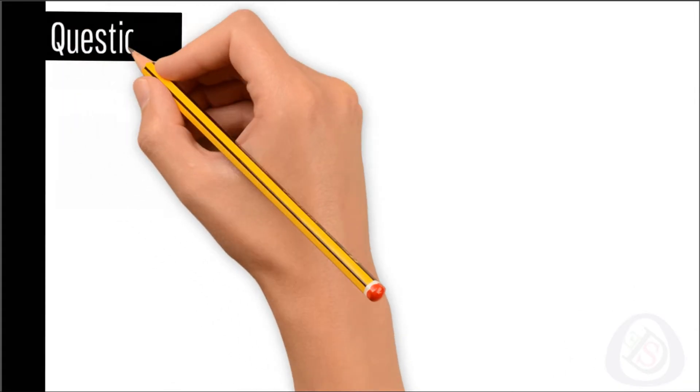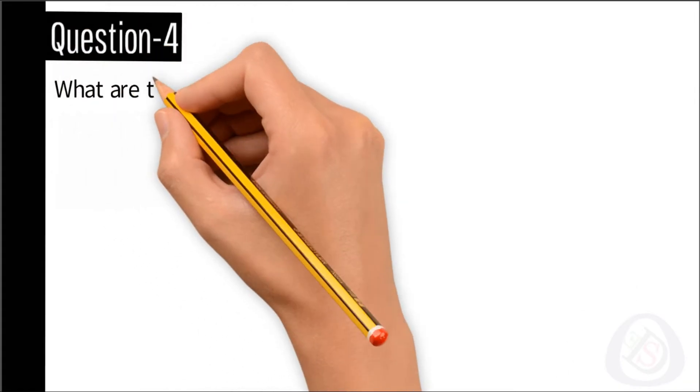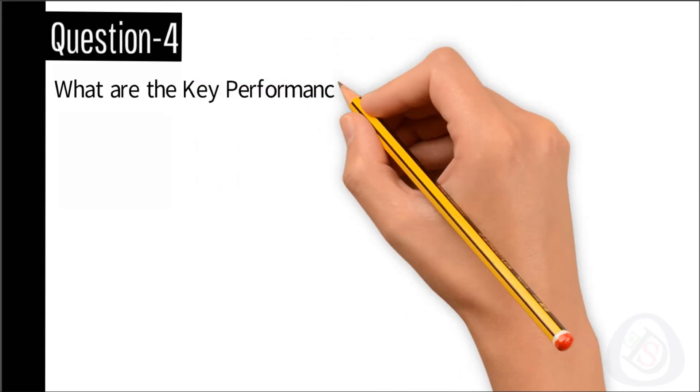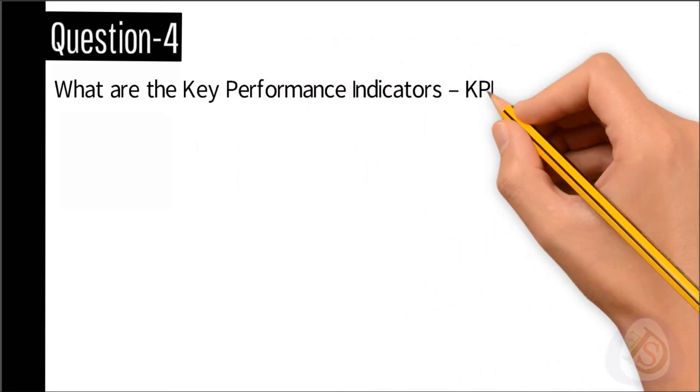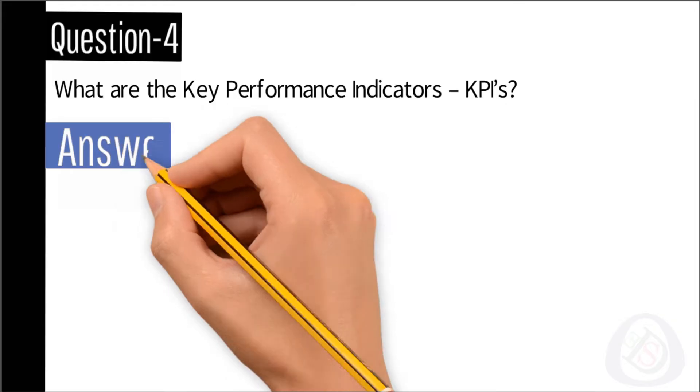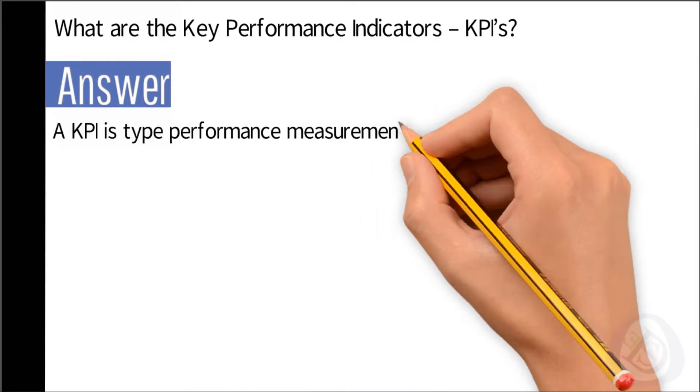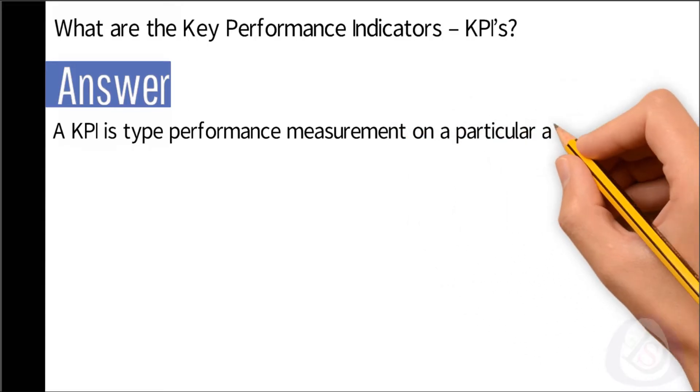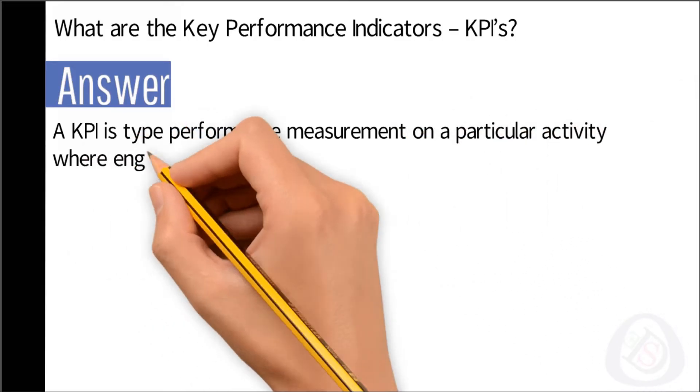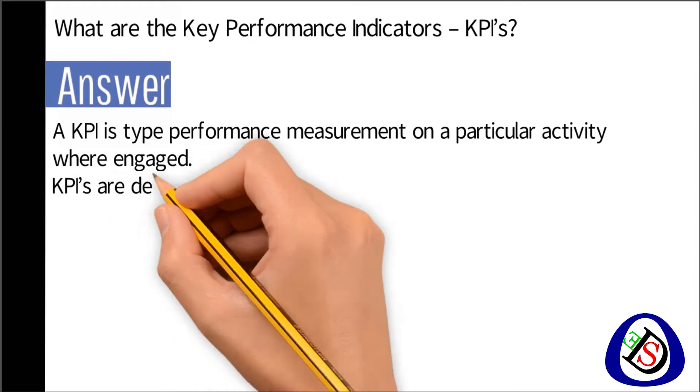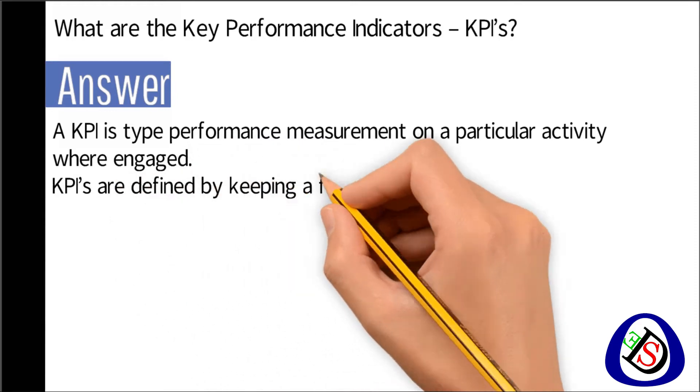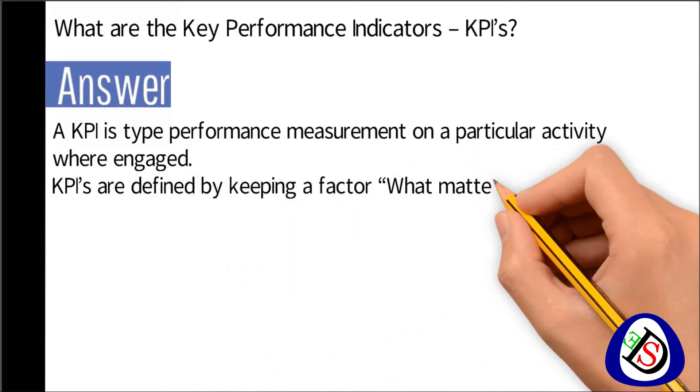Question number four: What are the key performance indicators or KPIs? Answer: A KPI is a type of performance measurement on a particular activity where engaged. KPIs are defined by keeping a factor what matters the most.